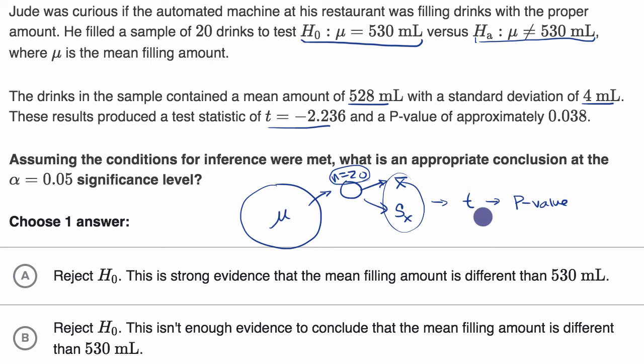The p-value is, what is the probability of getting a result at least this extreme if we assume that the null hypothesis is true? And if that probability is lower than our significance level, then we say that's a very low probability. We're going to reject our null hypothesis, which would suggest our alternative.